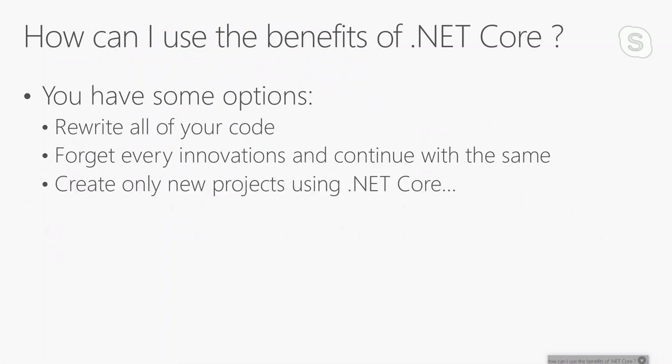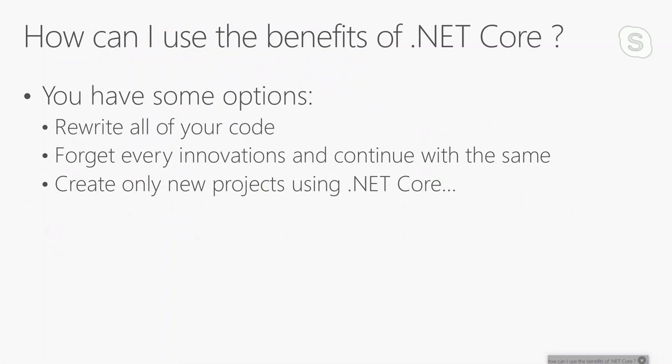You have some options. You can rewrite all of your code, but that's impossible in many cases — maybe you have a very big legacy application in production and it's not viable to change it. You can forget every innovation and continue with the same approach, accepting that .NET Core is cool but not for you. Or you can create only new projects using .NET Core.